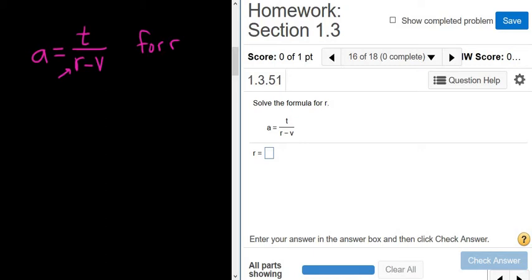So since we have an r minus v here, we'll start by multiplying both sides by r minus v to clear the fractions. So here they'll cancel, and here we simply get parentheses r minus v times a, and that's equal to t.